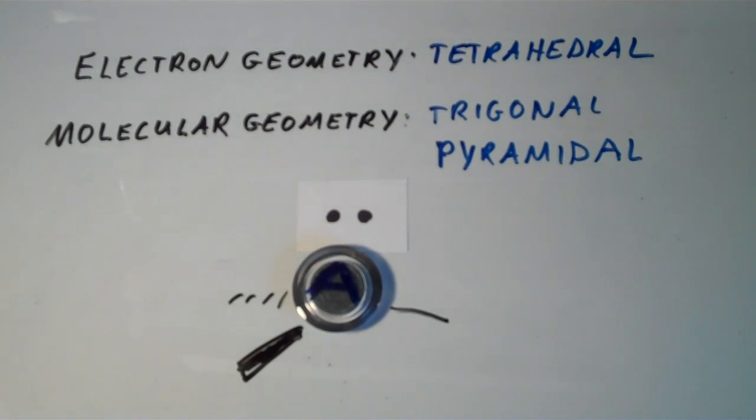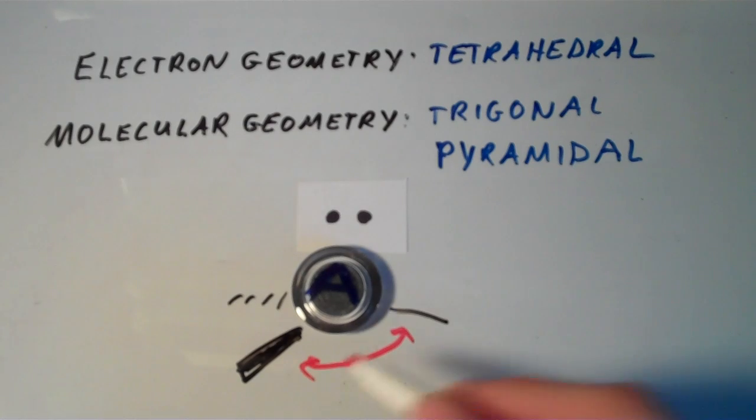And the bond angle between these two atoms would still be the tetrahedral value approximately, which is 109.5 degrees.